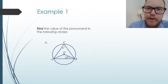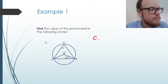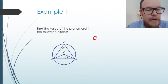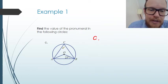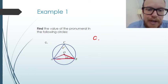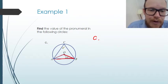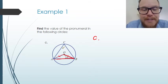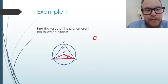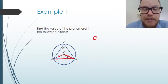Our final question is a little more challenging with a few more steps. Looking at triangle AOB, we have AO and BO as radii of the circle, so they're the same length. Therefore triangle AOB is an isosceles triangle.